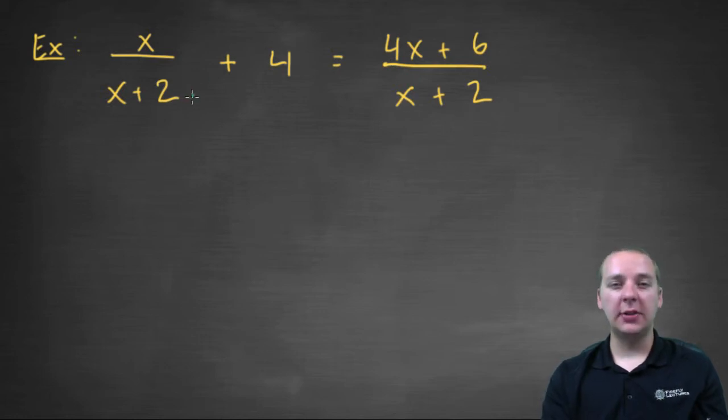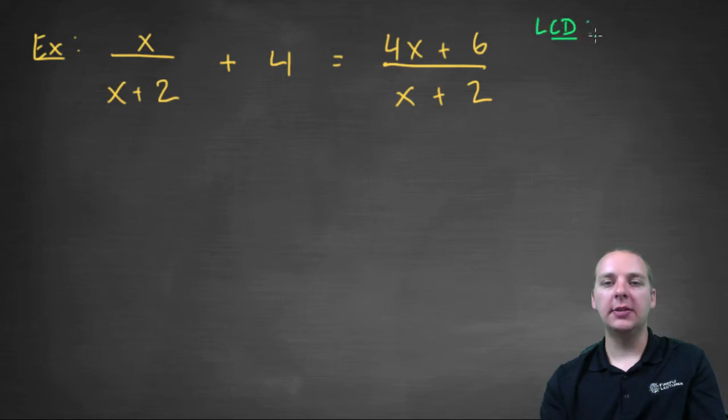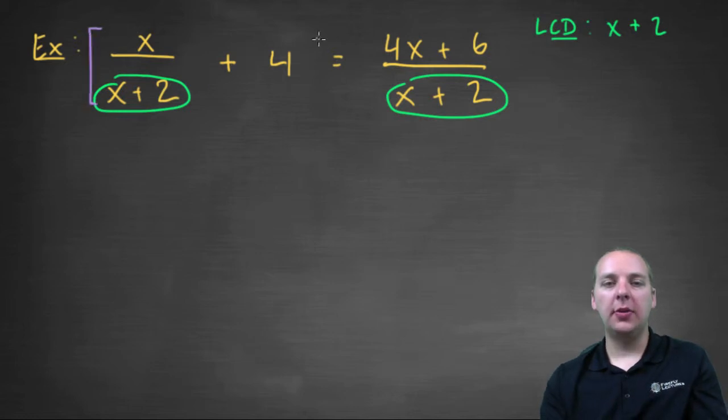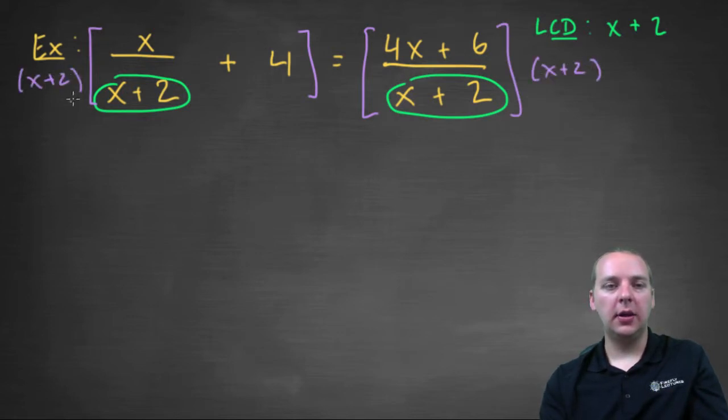Here I see some rational expressions on both sides. The first thing I'm going to do, as I said earlier, is find the LCD. Here I only have two denominators, and they're even the same thing. They both have a denominator of x plus 2. So it's pretty clear that is going to be my LCD, it's going to be x plus 2. We're going to multiply that through the left side and the right side.